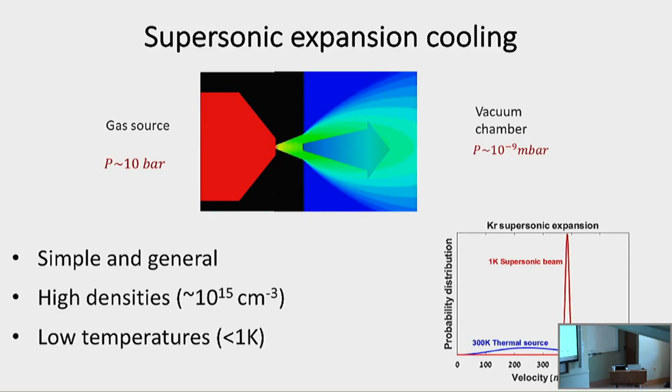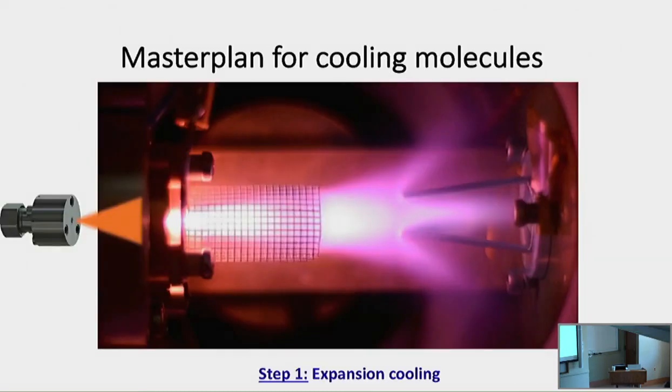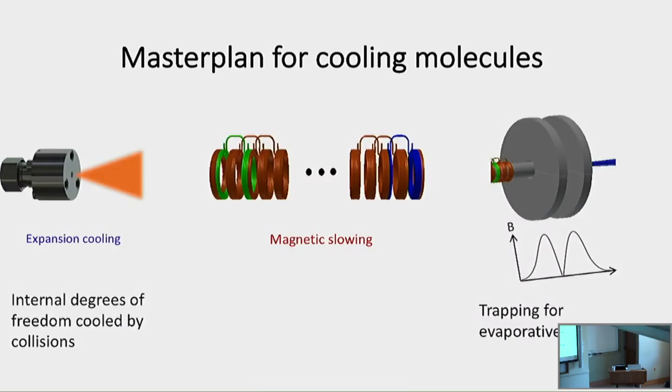And the idea is very sort of simple. If you look at a generic cold atom experiment, you always can divide it in several parts. You start with some source, right, oven as the simplest. Usually you need to decelerate, not necessarily. When you trap, laser cool. And eventually, the last step in 99.9% of these experiments, reaching really the ultra-cold regime, is done by evaporation.